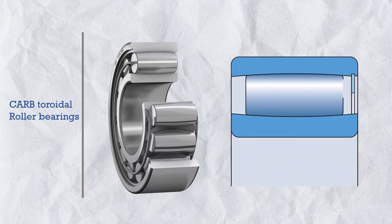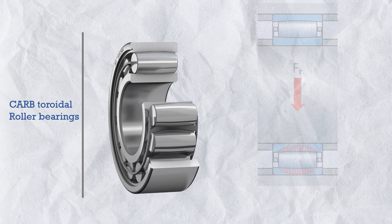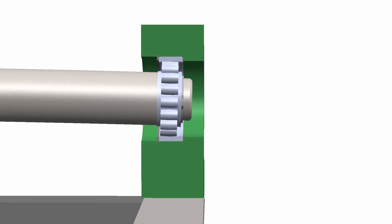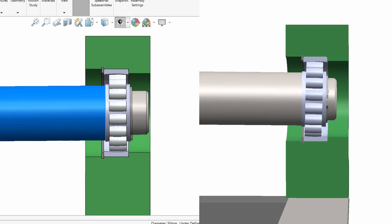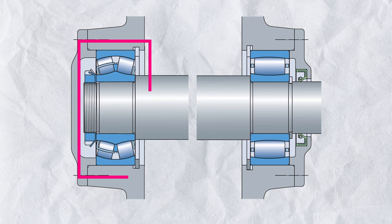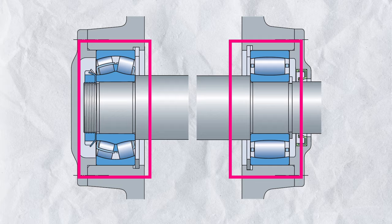The most important and unique bearing is the CARB toroidal roller bearing. It has one row of long, slightly barrel-shaped symmetrical rollers with a torus-shaped raceway profile, allowing it to accommodate exclusively radial loads. The key distinguishing feature is that this bearing can accommodate both angular and axial misalignment simultaneously — none of the other bearings discussed can do this. However, it is a non-locating bearing and cannot be used alone or at both shaft ends; it must be paired with a locating bearing like a spherical roller bearing or self-aligning ball bearing to constrain axial position.